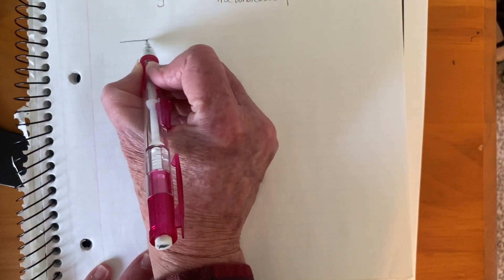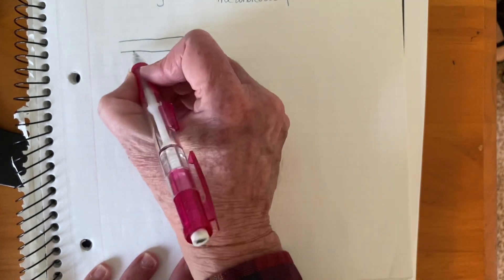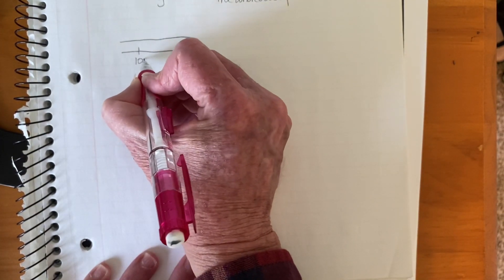So we're going to look at this as a double number line. Remember a markup is a percent of increase. So I'm going to put 100% right here.